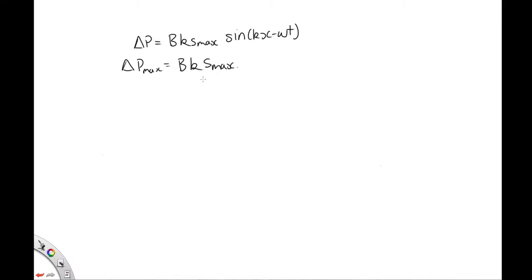Now the bulk modulus isn't an especially useful thing to work with, so let's try and change this around a bit. We've said that the velocity is equal to the square root of B, the bulk modulus over the density, which tells us that the bulk modulus is equal to the velocity squared times the density. So we can replace this term with that. k is equal to 2 pi over lambda. Lambda is equal to the velocity over the frequency. So we can write this as omega over v.